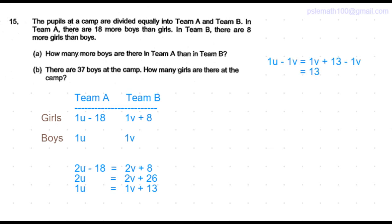So part A of the question is: how many more boys are there in Team A than in Team B? That is 13. So there are 13 more boys in Team A than in Team B.